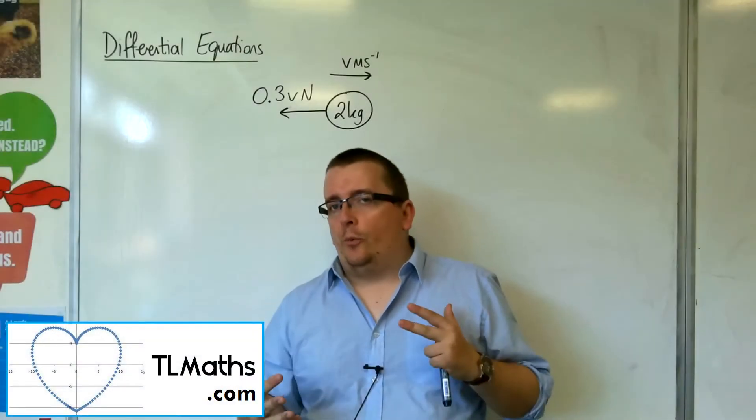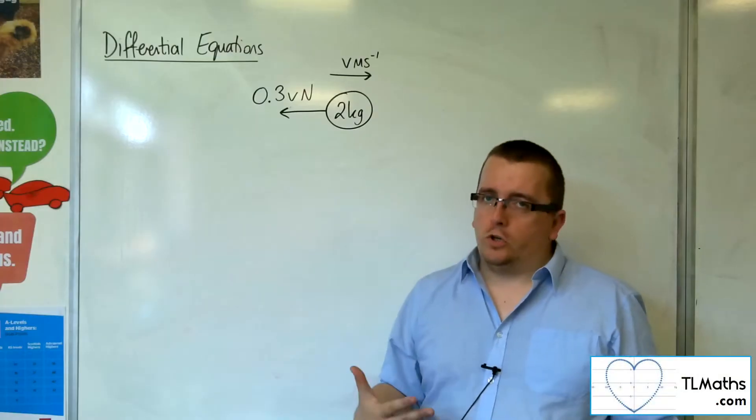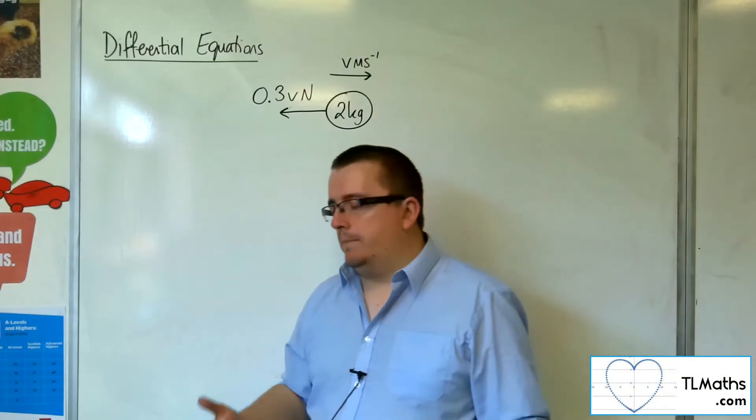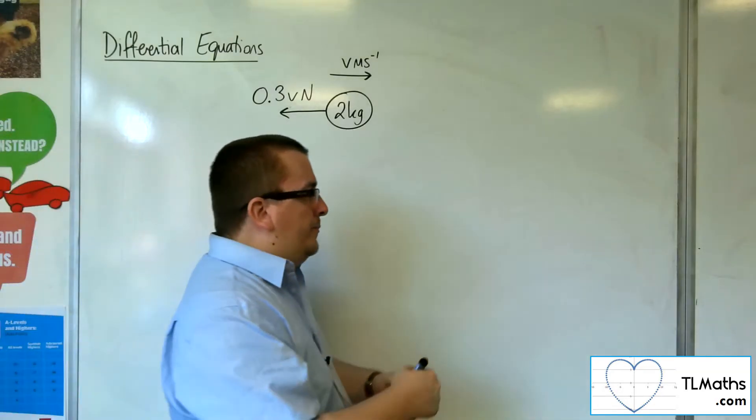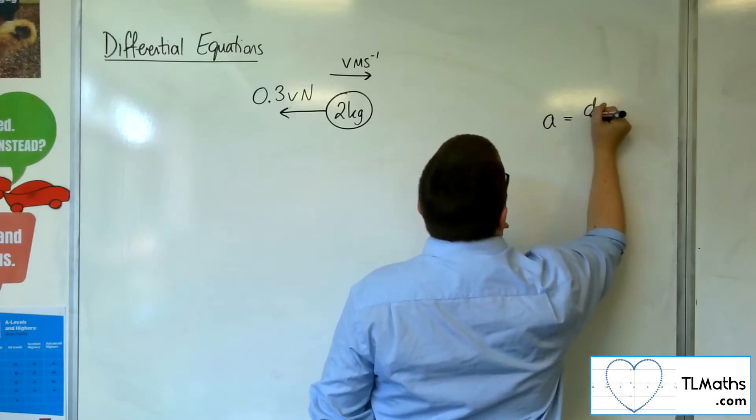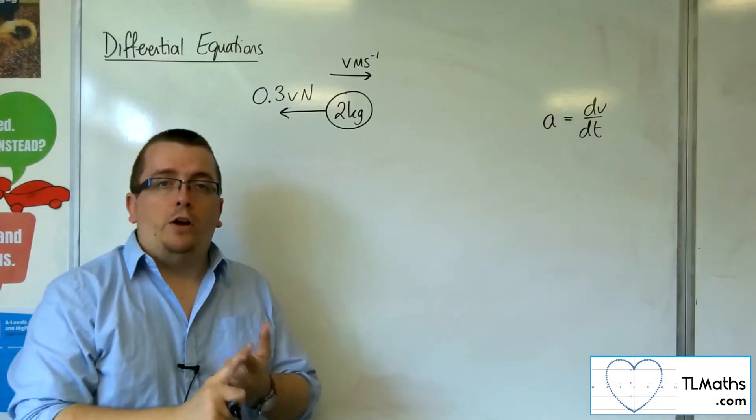So when it comes down to it, f equals ma is actually a differential equation in terms of the velocity. And the reason why that is, is because the acceleration is equal to dv by dt, the change in velocity over time.